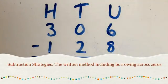So in this video, we're going to keep looking at the written method for subtraction, and this time borrowing across zeros, which can be a little bit confusing.